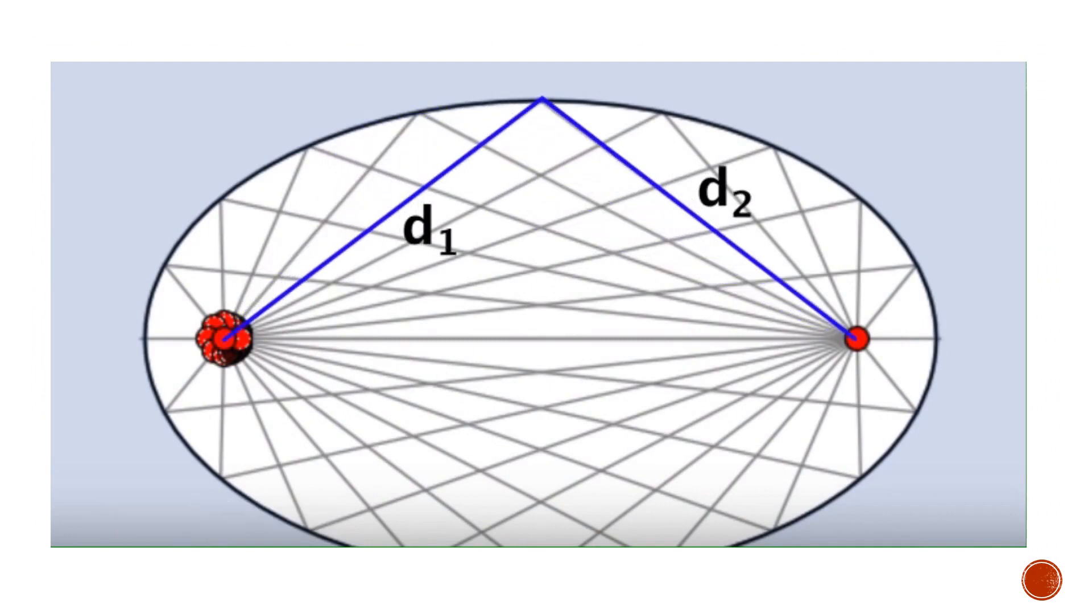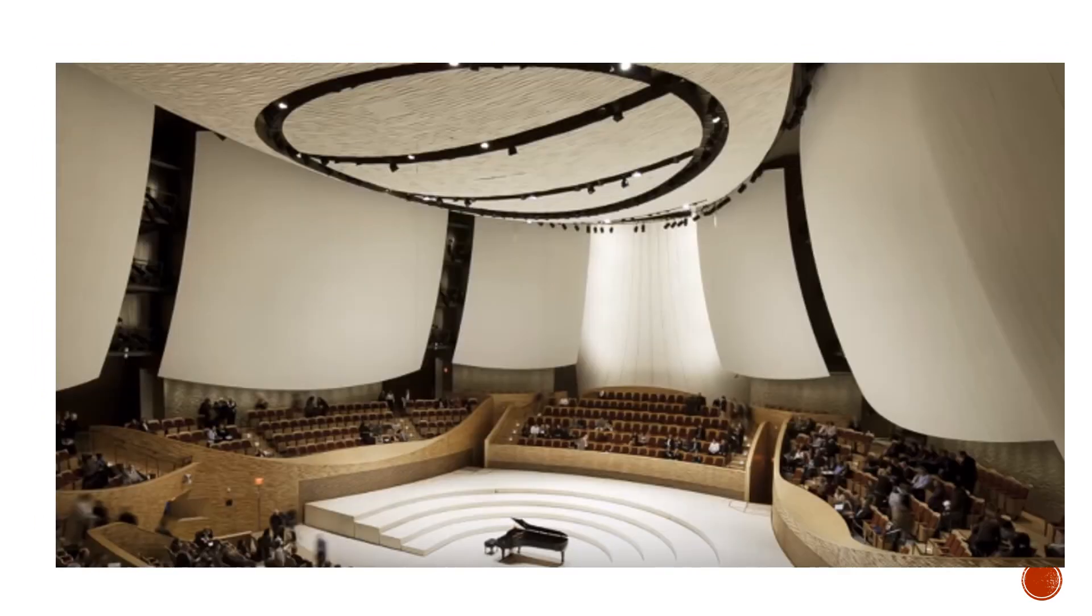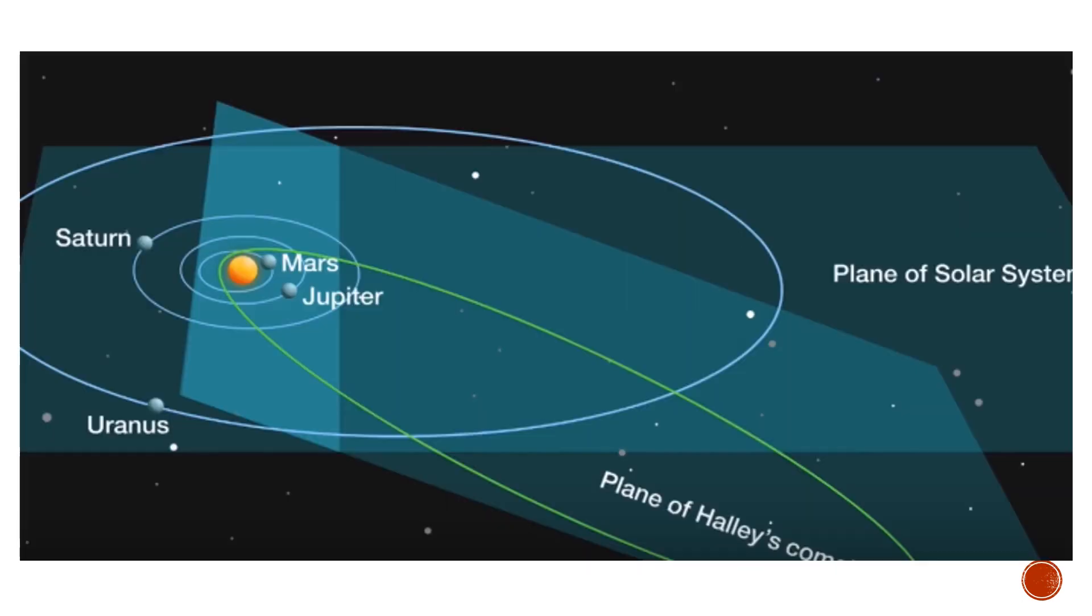After parabolas, we now turn to ellipses to use this property. One last application of ellipses: all planetary orbits are always seen in the form of ellipses.